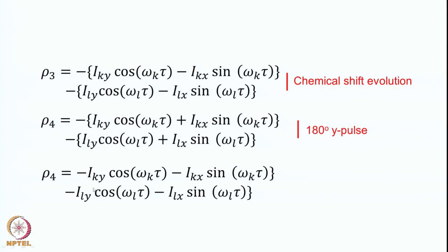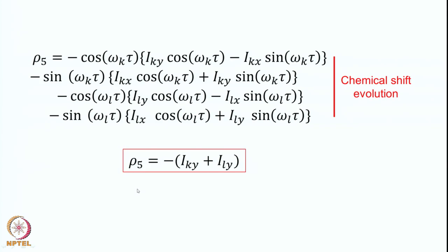This is at time point 4. To write it explicitly: we have minus Iky cosine(omega_k tau) minus Ikx sin(omega_k tau), and similarly minus Ily cosine(omega_l tau) minus Ilx sin(omega_l tau). Next, we have to evolve under chemical shift once more for the next tau period. There are four terms and each one has to be explicitly evolved. The first term is Iky, which evolves under the chemical shift as: Iky cosine(omega_k tau) minus Ikx sin(omega_k tau). The second term involving Ikx gives: Iky cosine(omega_k tau) plus Ikx sin(omega_k tau).